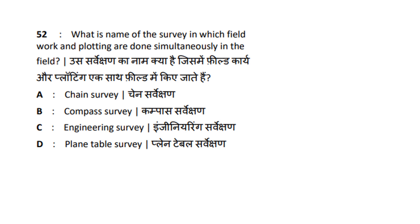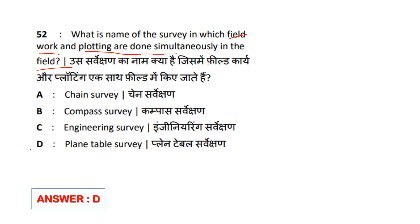What is the name of survey in which fieldwork and plotting are done simultaneously in the field? Options: Chain Survey, Compass Survey, Engineering Survey, Plain Table Survey. Plain table survey means fieldwork and plotting work can be done simultaneously. So answer is option D.